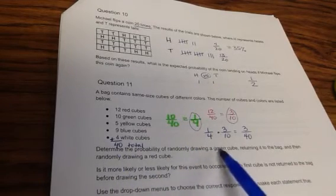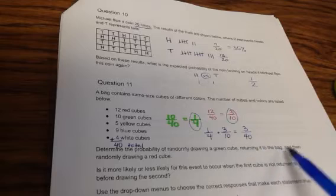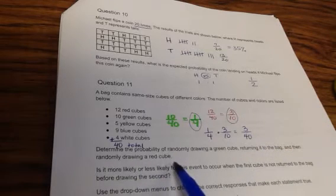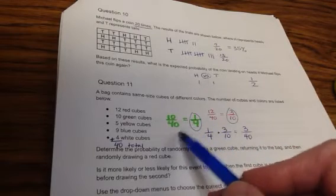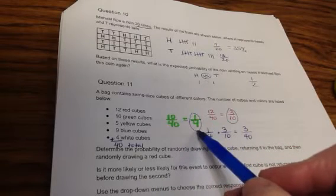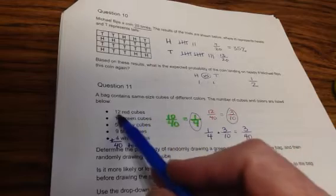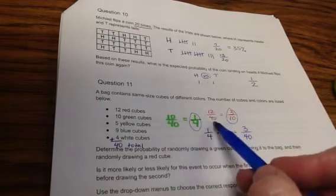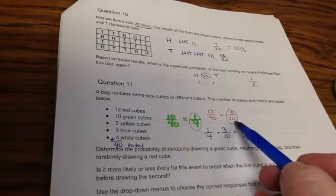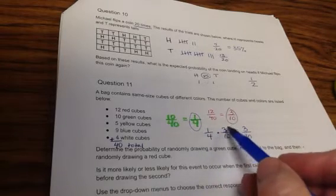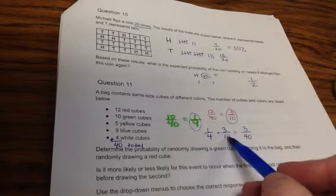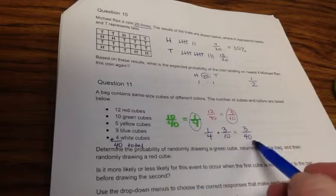Determine the probability of randomly drawing a green cube, returning it to the bag, and then randomly drawing a red cube. Well, a green cube is going to be 10 out of 40, which is equal to 1 fourth. A red cube is 12 out of 40, which is equal to 3 out of 10. So to figure the probability, you take each of these and you multiply them together. 1 fourth times 3 tenths. So that's going to equal 3 fortieths.